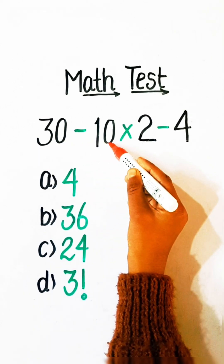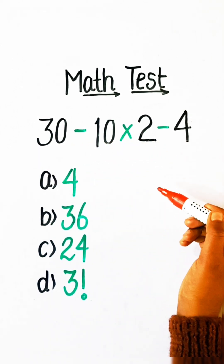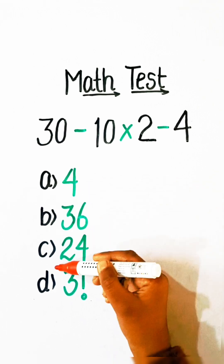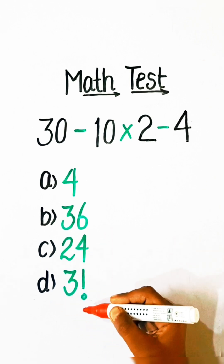30 minus 10 multiplied by 2 minus 4 equals to what? Option A: 4, Option B: 36, Option C: 24, or Option D: 3 factorial.